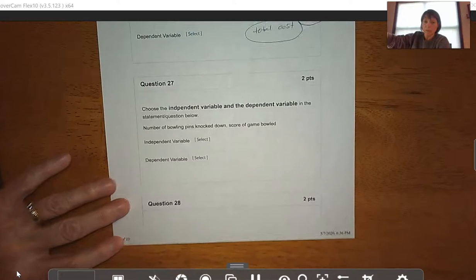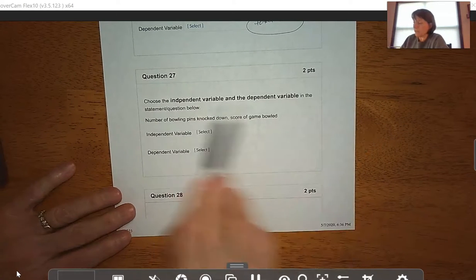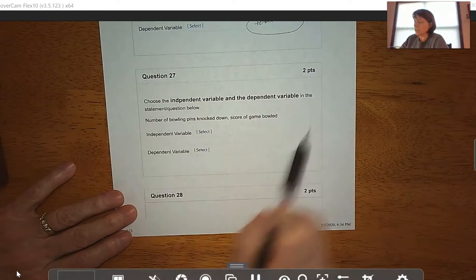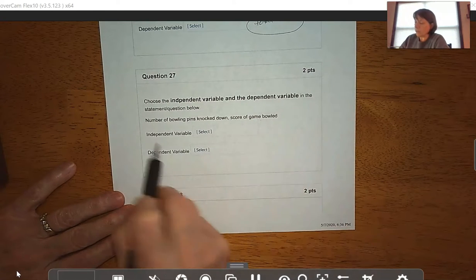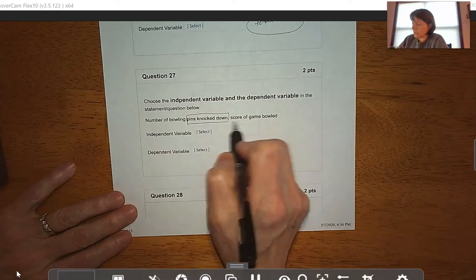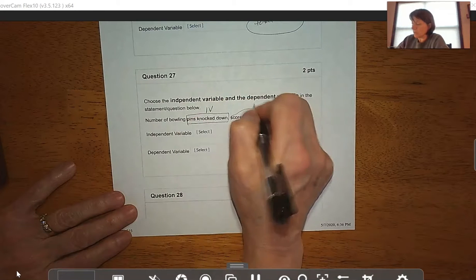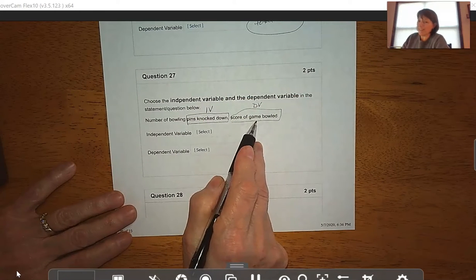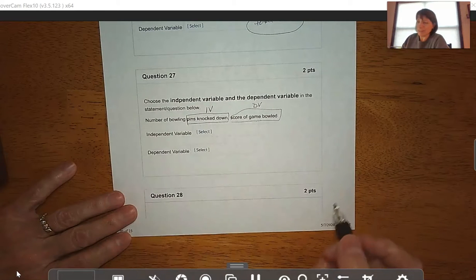Question 27, very similar. We're just choosing the independent variable and the dependent variable. The number of bowling pins knocked down determines my score from my game, so my independent variable is going to be the pins that I knocked down, and my dependent variable is the score of my game. My score is determined by how many pins are knocked down.